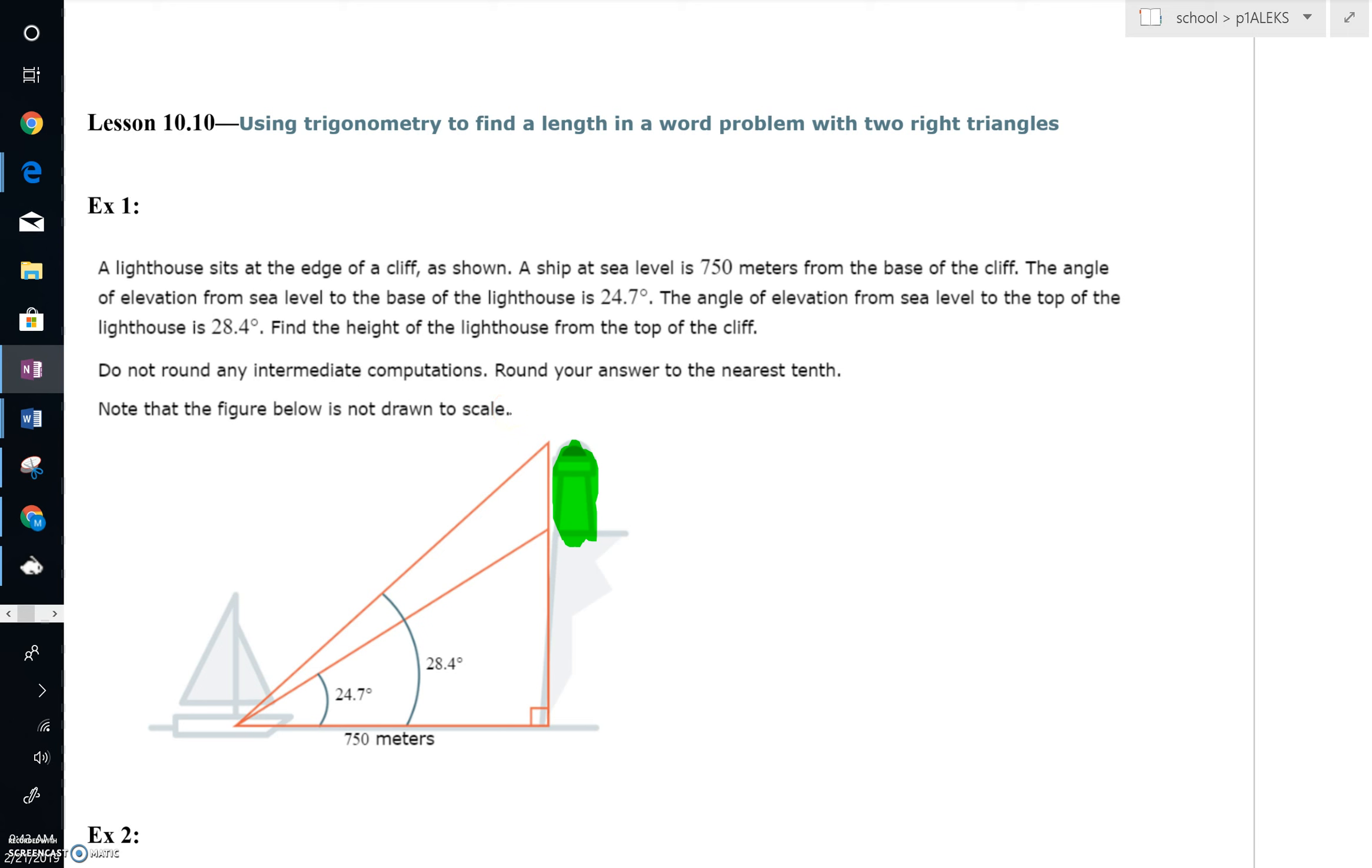Algebra 2, Lesson 10.10. We're going to use right triangle trig, SOHCAHTOA, to help find a length in a word problem, but the catch is today we're going to be working with two right triangles to find that length.